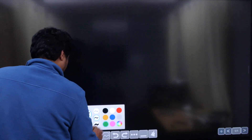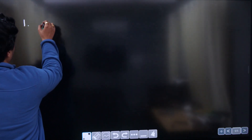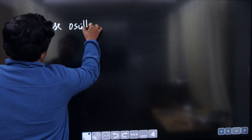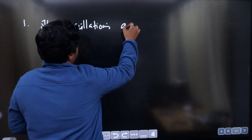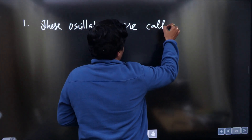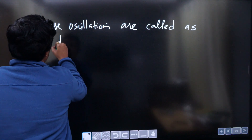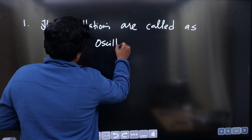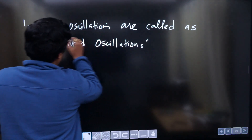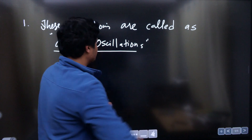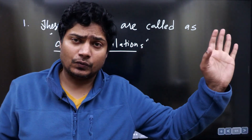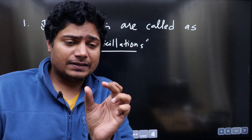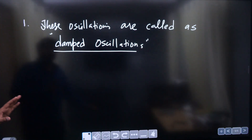These oscillations are called damped oscillations. What is damping here? The amplitude is getting reduced to zero. So these oscillations where the energy and amplitude keep reducing are called damped oscillations. Remember that word — damped oscillations.